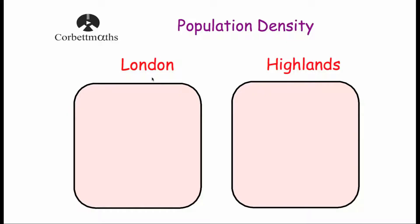If we were to compare two regions, such as London and the Highlands of Scotland, I would say London's quite a crowded place, whereas the Highlands of Scotland — well, that's not a crowded place. Rather than just saying one place is crowded and one place is not crowded, it's very useful to be able to work out how crowded somewhere is or not. So what we do is we work out a thing called population density.